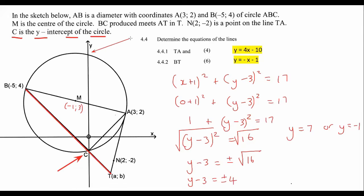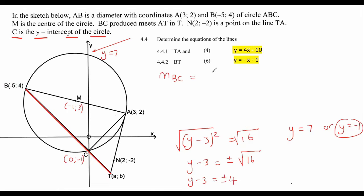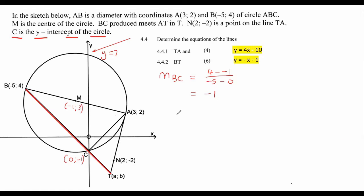So the coordinates of point C will be 0 and negative 1. Now we can easily get the equation of the line BT due to the fact that we now have the coordinates of point B and point C. So we can work out the gradient of BC as 4 minus minus 1 over minus 5 minus 0, and that gives us negative 1. Then you can work out C however you like. You should end up with a C value of negative 1. So the equation of BT is negative X minus 1.